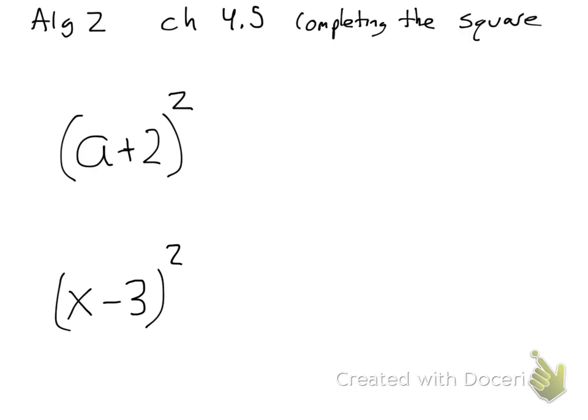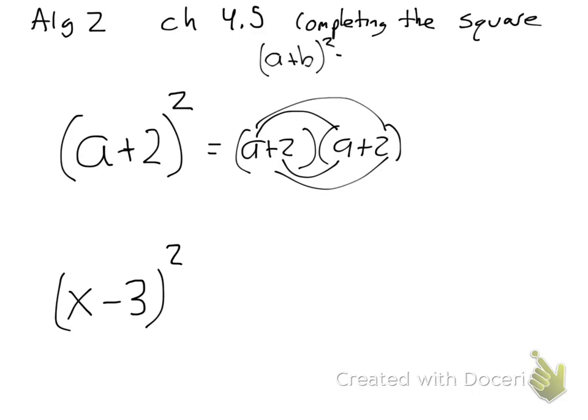Guys, these things here, a plus 2, the quantity a plus 2 squared and the quantity x minus 3 squared, they are perfect square binomials, which means it's something times itself. So if you remember that this truly would be a plus 2 times a plus 2. And then, of course, you can FOIL this. And if you remember, FOILing is first, outside, inside, last. You can do that. Now, we also, I'm hoping that we start to remember that a plus b squared is equal to a squared plus